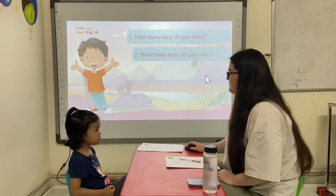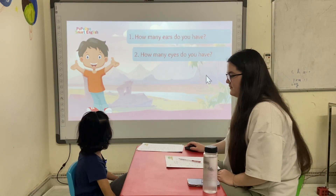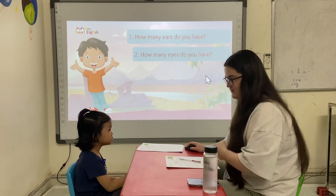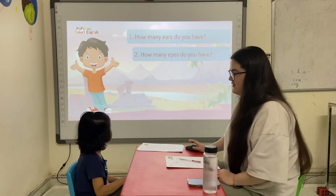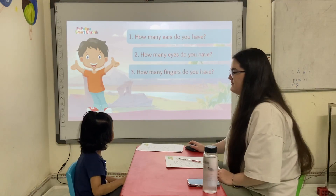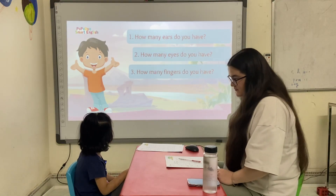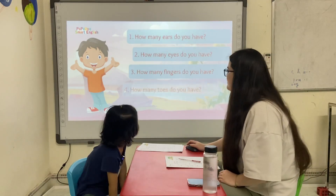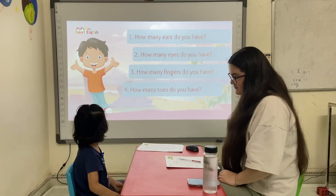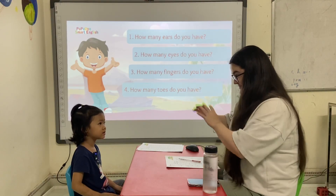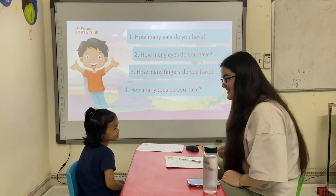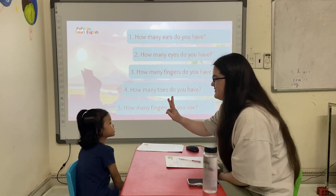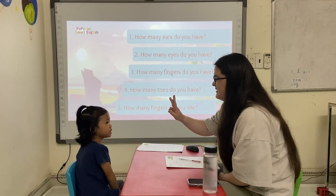How many eyes do you have? How many fingers do you have? How many toes do you have? I have two toes. I have ten toes. Okay, how many fingers do you see? I see three fingers.